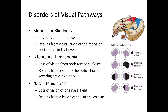Next is bitemporal hemianopia, due to a lesion of the optic chiasm. If the optic chiasm is cut, you will get bitemporal hemianopia — loss of vision in your lateral areas, so far right and far left. This deficit can arise when a tumor develops in the pituitary gland, which is medially located and very close to the optic chiasm.